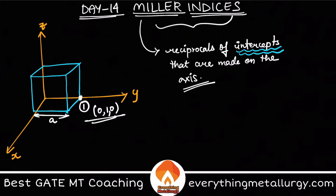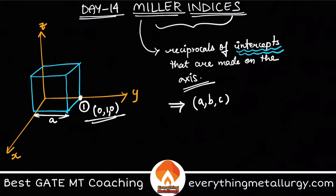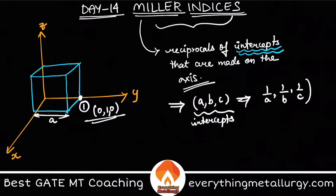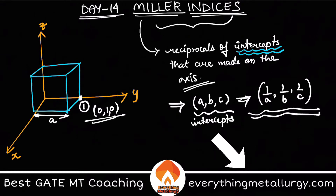But if I talk about a direction or a plane, how can I calculate the intercept? Let's say I have a plane where A, B, C are my intercepts. Then the Miller indices will be 1/A, 1/B, and 1/C. So Miller indices are used to represent that particular plane or direction.